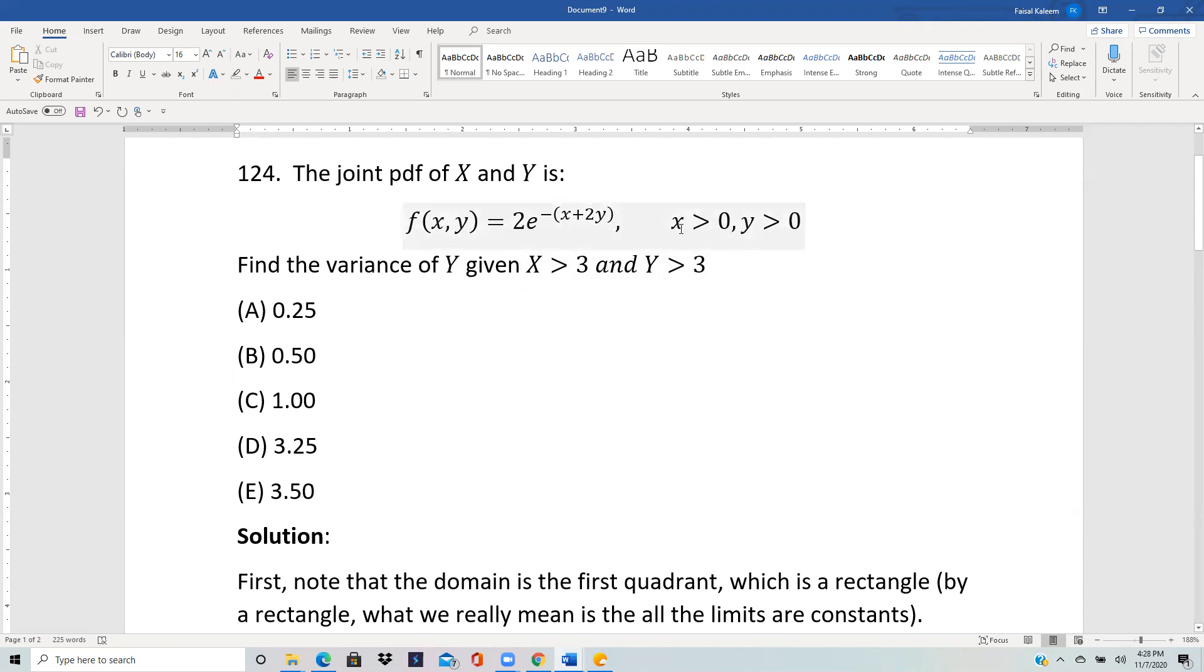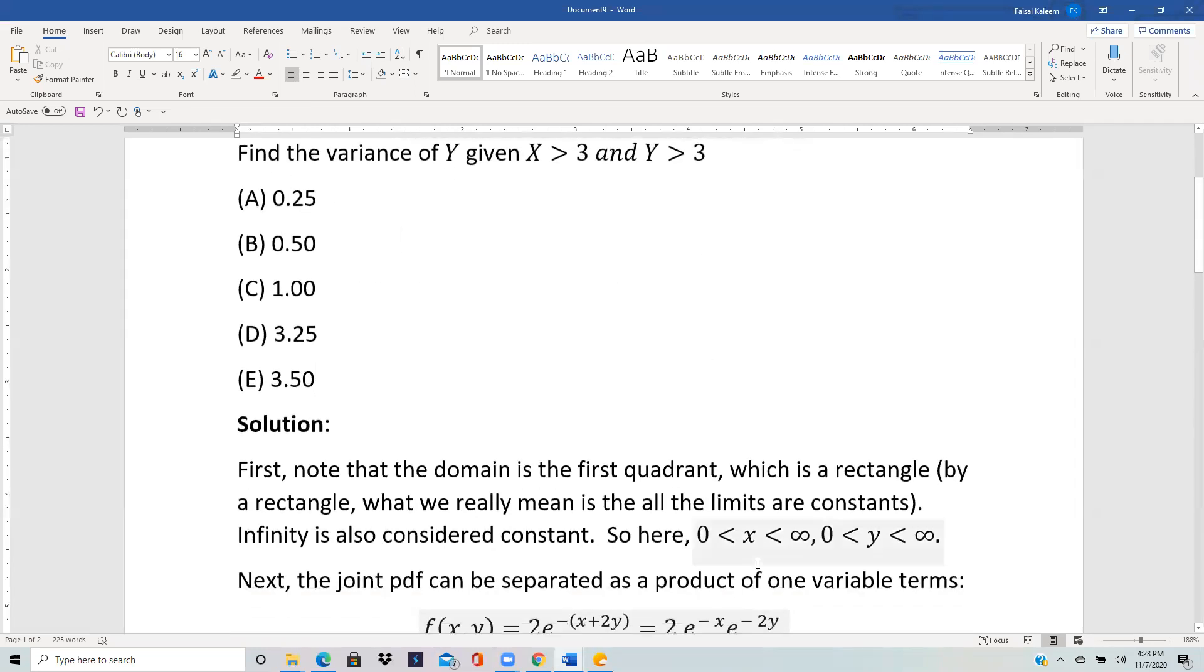One is that the domain should be a rectangle, which it is because x greater than zero means x between zero and infinity, y greater than zero means y between zero and infinity. And by a rectangle what we really mean is that all the four limits should be constant. So constant, constant, constant, constant. Remember infinity is a constant. So this is a rectangle, infinite rectangle. It's the whole first quadrant. So the first condition is true.